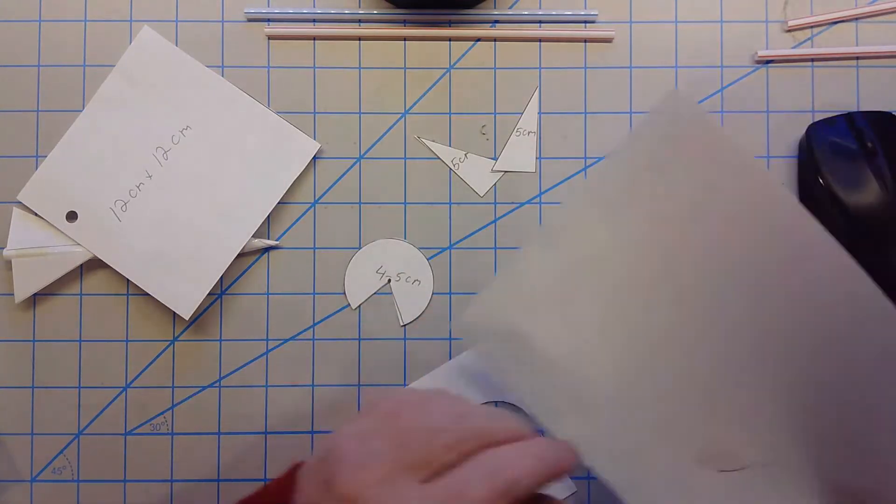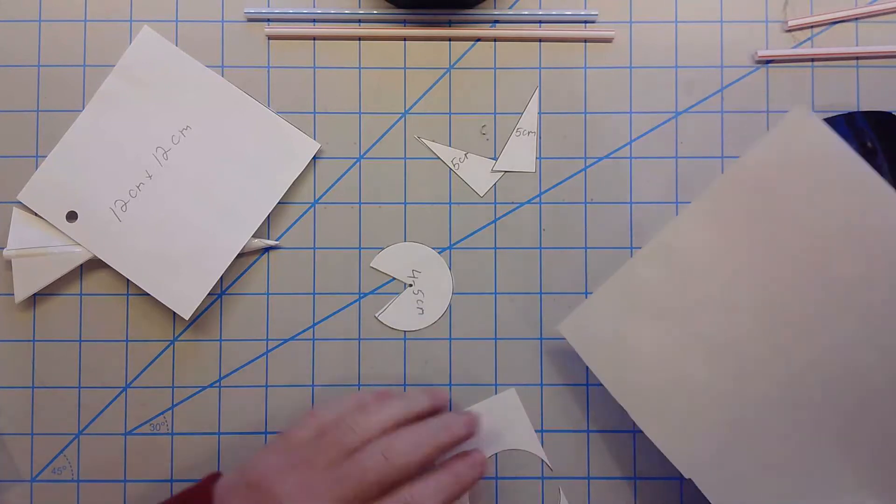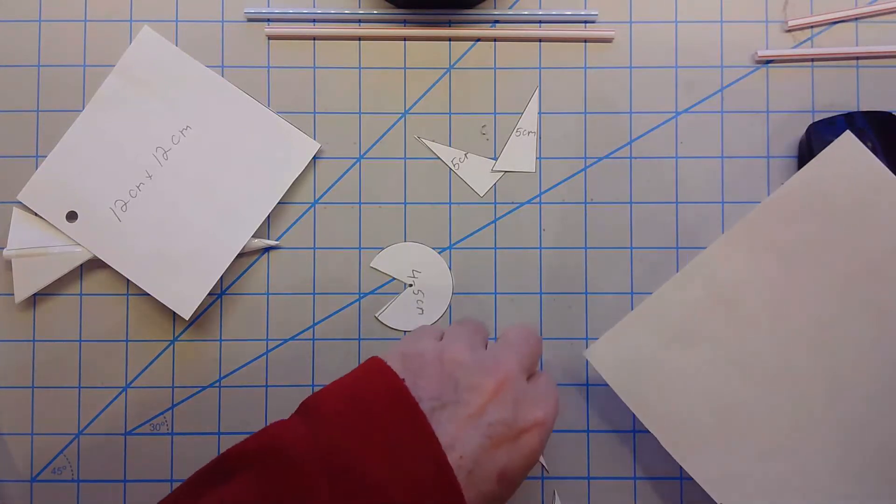Try to keep it to the top part because you can actually make another one the same size out of the other half of the piece of paper, so you make two rockets out of one sheet, which is kind of nice.